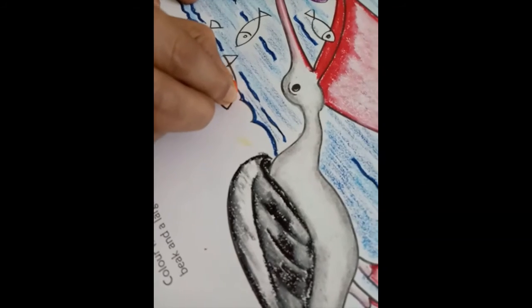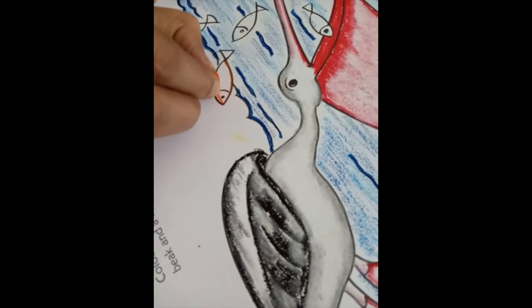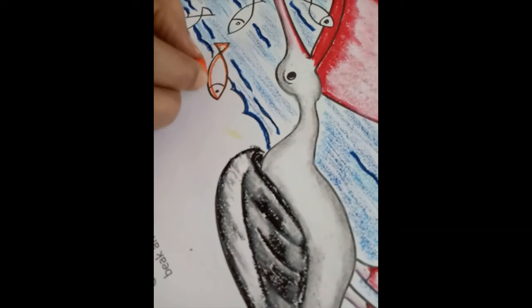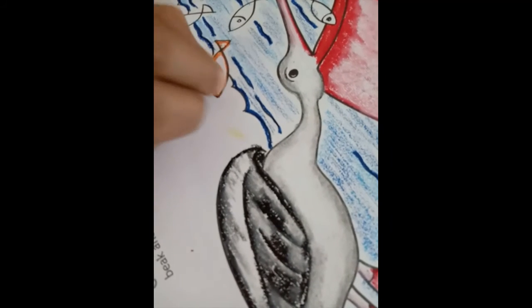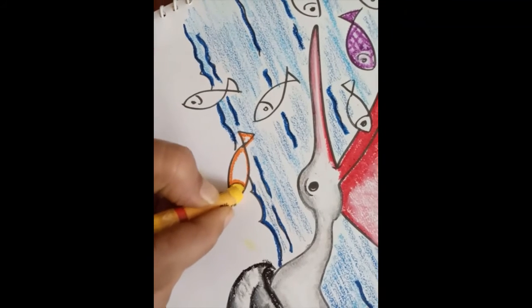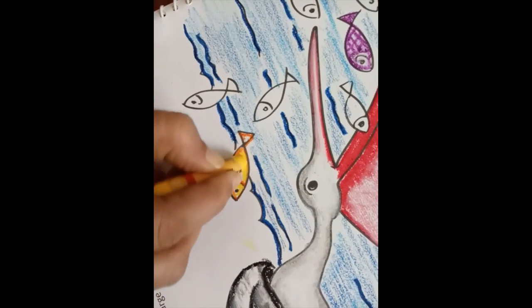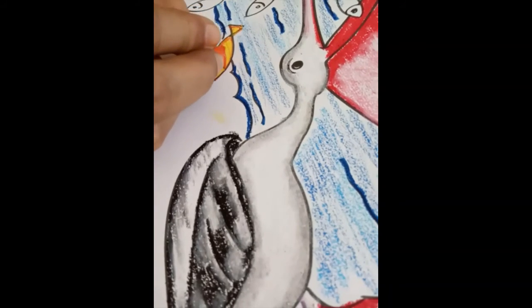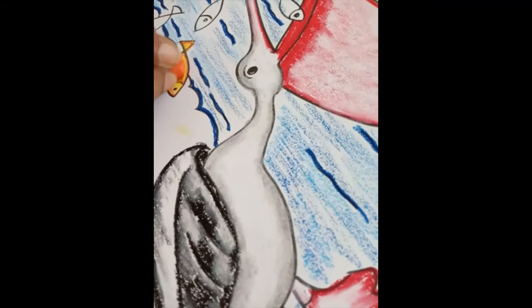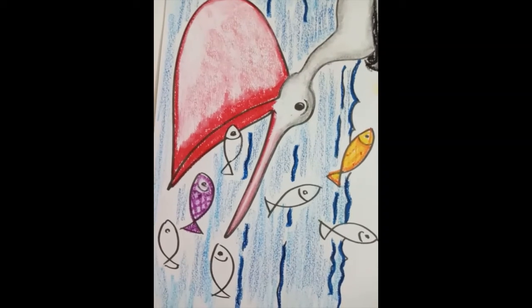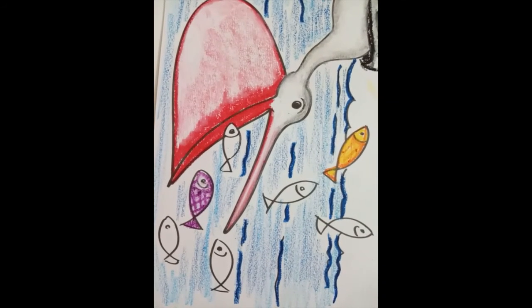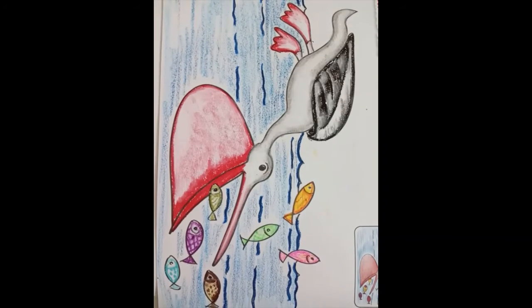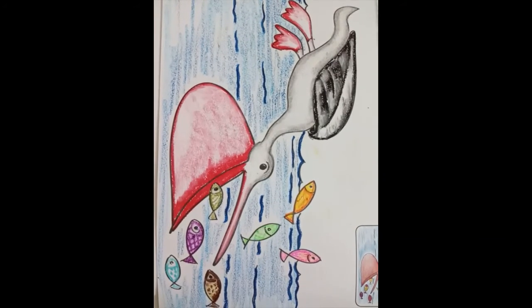Next we are taking orange and yellow. And in the same manner color the rest of the fish with any color of your choice. Our drawing is now complete.